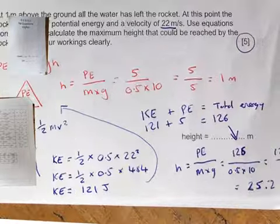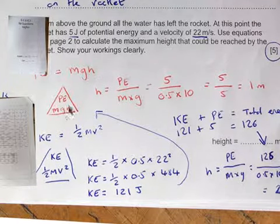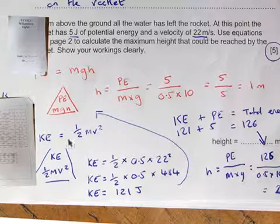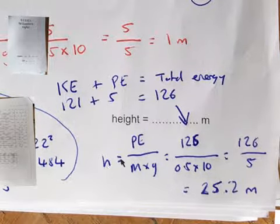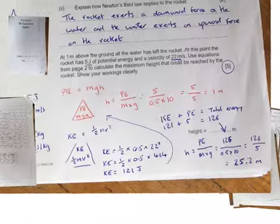Now I can use my original triangle to solve for height because I know now my total energy. And by the way, PE, kinetic energy, potential energy, it's all energy. Remember, energy cannot be created or destroyed, it's only transferred from one to the other. So these are generally interchangeable here. So now I can solve for h which is PE over m times g. I've got 126 on top and then 5 on the bottom. It's going to give me 25.2 meters, and that's how far it's going to reach, or it could reach I should say.